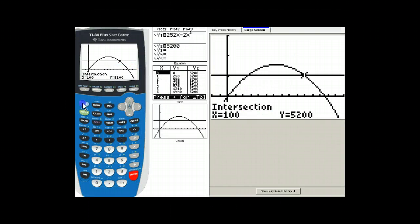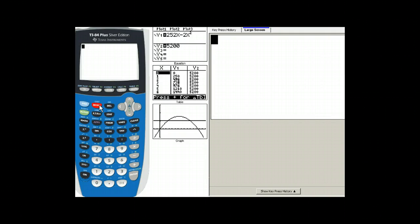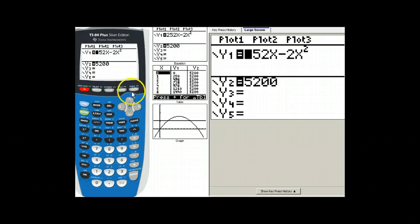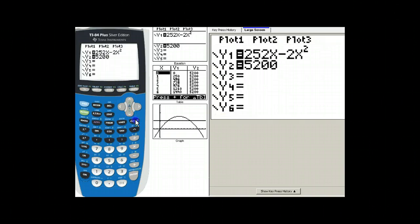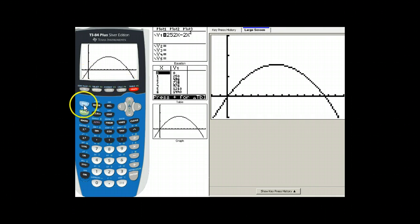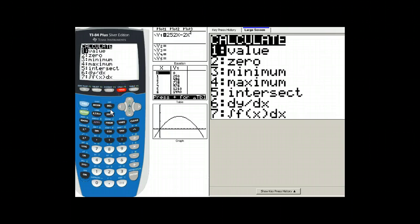Now on to the final part. We need to go and find which number of tickets maximizes the cost. So that would be finding the vertex. Second, calc, maximum, option number 4.